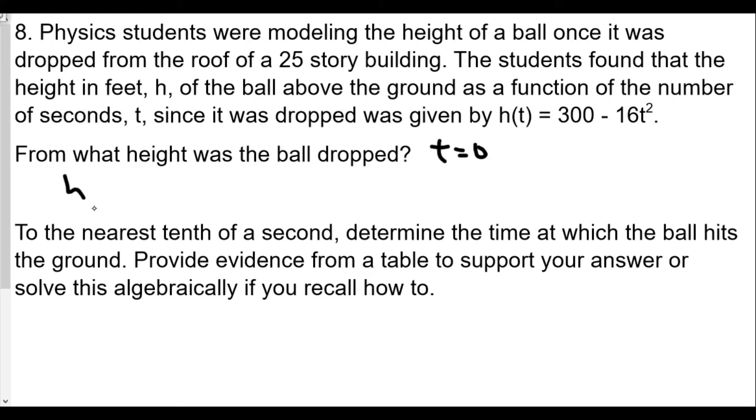What's the height when t = 0? When the ball is dropped, before it's dropped, t = 0. So h(0), the height will be 300 - 16 times 0², which is just going to be 300 feet. It's almost like you're holding the ball and you're about to let go. That's the height from the roof of a 25-story building, which in this case they equated to be 300 feet.